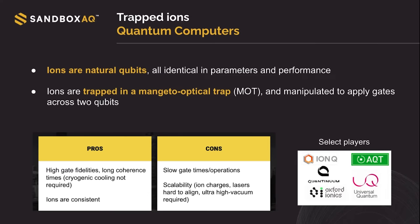A second type of quantum computer that is really important is trapped ions. Ions are natural qubits, meaning all of them are identical in parameters and performance, which gives you consistency. These ions are trapped in a magneto-optical trap (MOT) and manipulated to apply gates across two qubits. Something good about trapped ion quantum computers is that they also have high gate fidelities. In this case, we also have long coherence times, and we don't need to put this in a fridge. However, the gate operations are slow, and there are also issues with scalability.